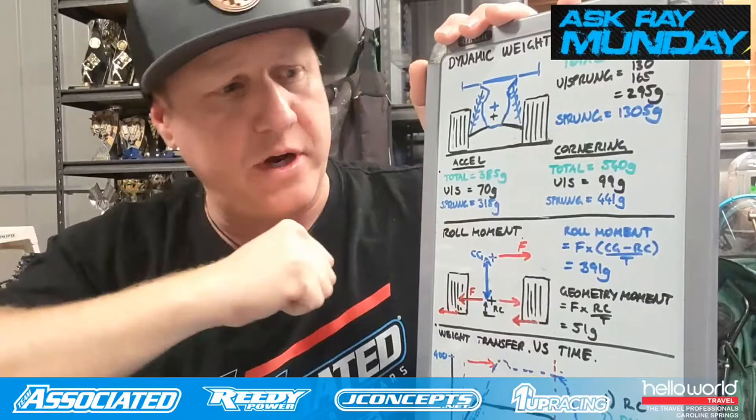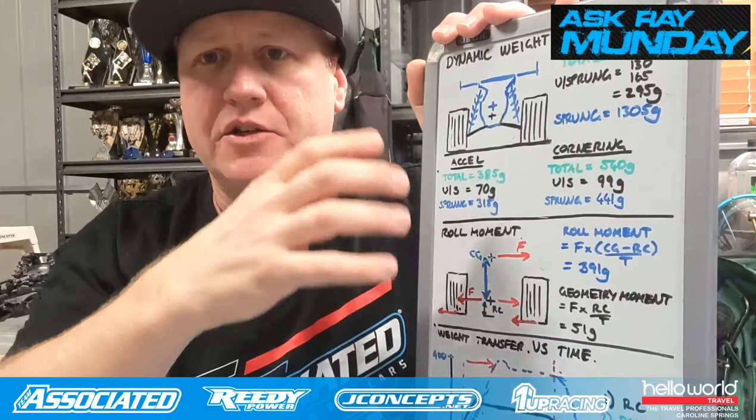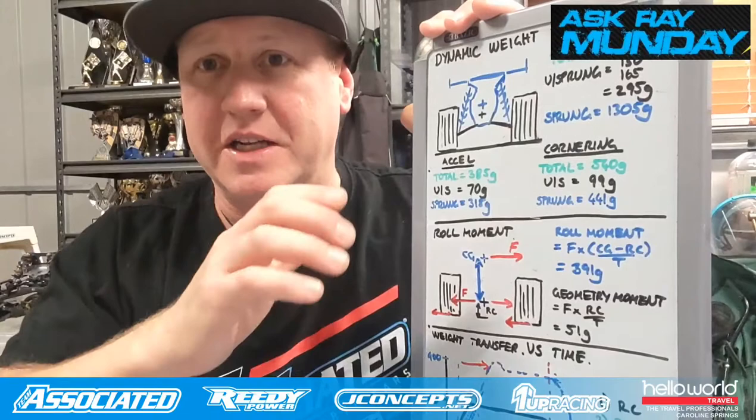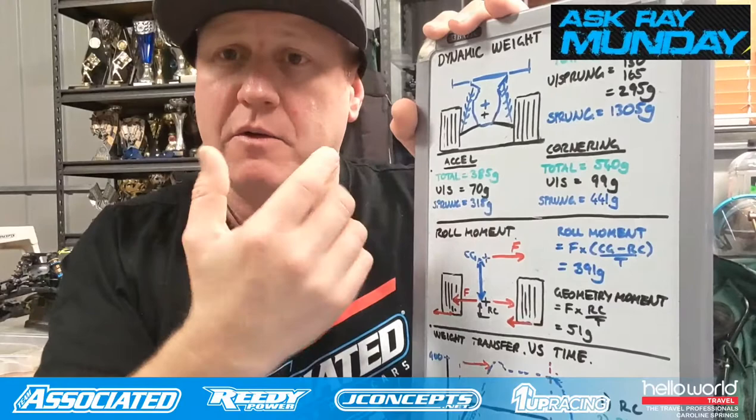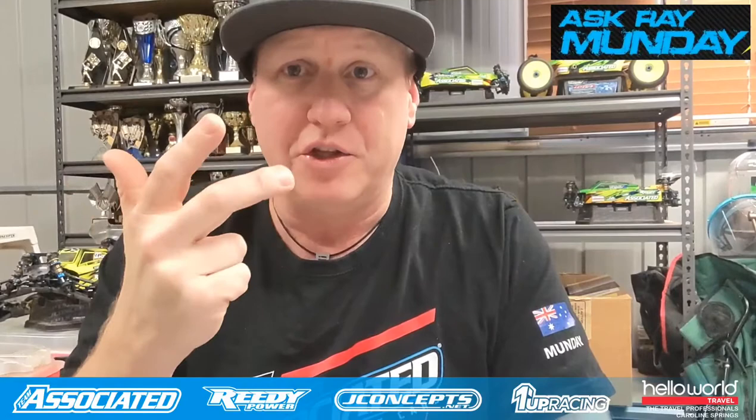Roughly 80 percent of the weight transfer happens because of the sprung mass moving around. When we first turn into a corner or accelerate, there's some weight transfer from the unsprung mass we can't control — it happens almost straight away because the tires are stiff. What we're mainly talking about is the 80 percent of weight transfer that comes from the sprung mass. The sprung mass is connected to the ground through the suspension by three key components: the spring, the shock absorber, and the geometry.